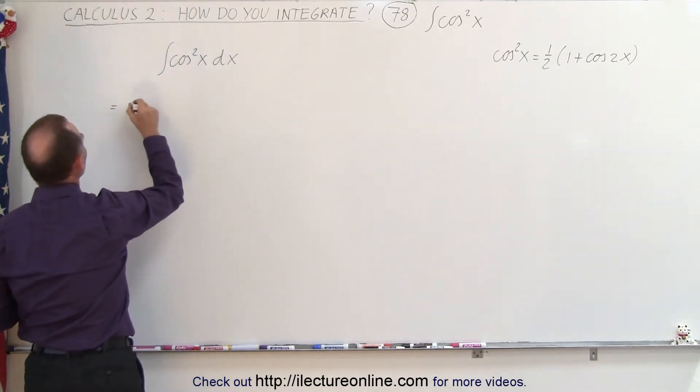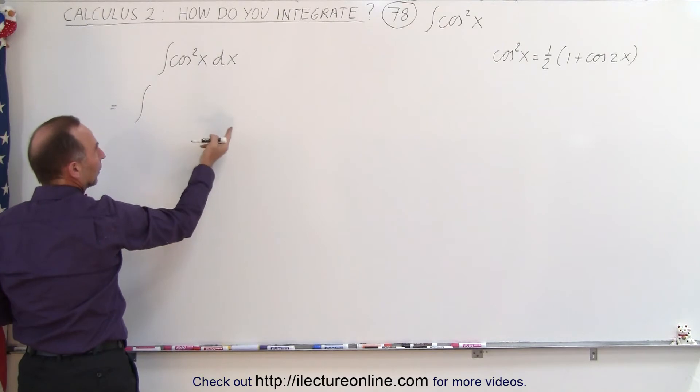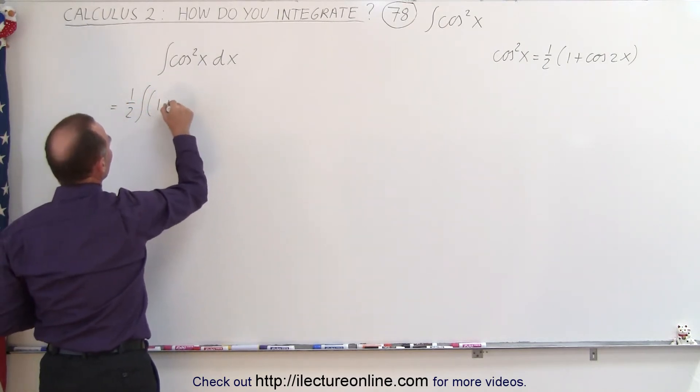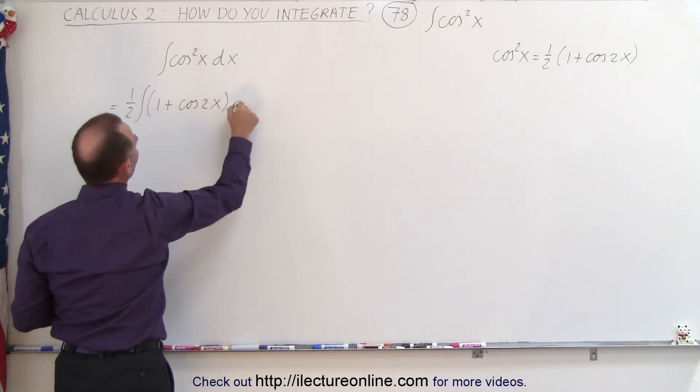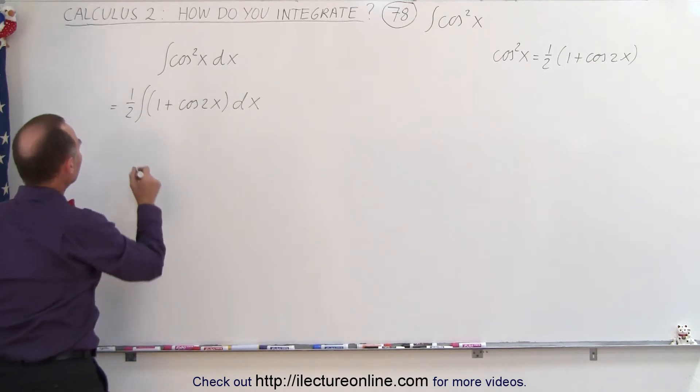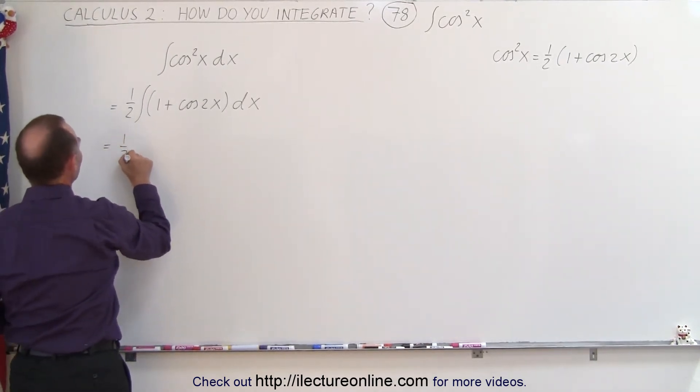So this can be written as the integral of, and we'll take the 1 half in front, times the quantity 1 plus the cosine of 2x times dx. And then we're going to write this as two separate integrals. This is equal to 1 half times,